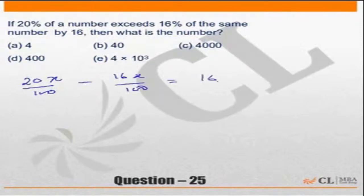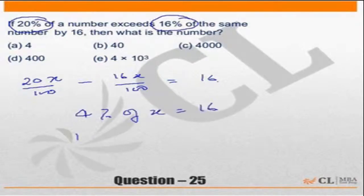You could have straight away said 20% minus 16% of the same number will be nothing but 4%. So 4% of the number is equal to 16 or 100% is nothing but 4 into 25 is 100. Should be equal to 16 into 25.